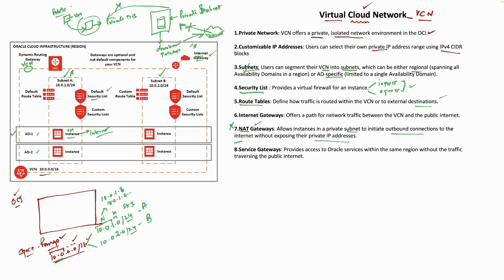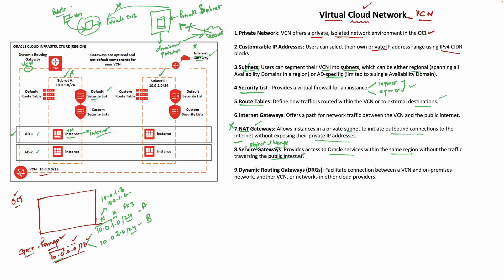Then we have the concept of service gateways. There are certain OCI services, like object storage, that you may need to access. A service gateway provides access to Oracle services within the same region without traffic traversing the public internet. You go via a service gateway if you need access from your VCN to object storage or other OCI services without using the public internet.